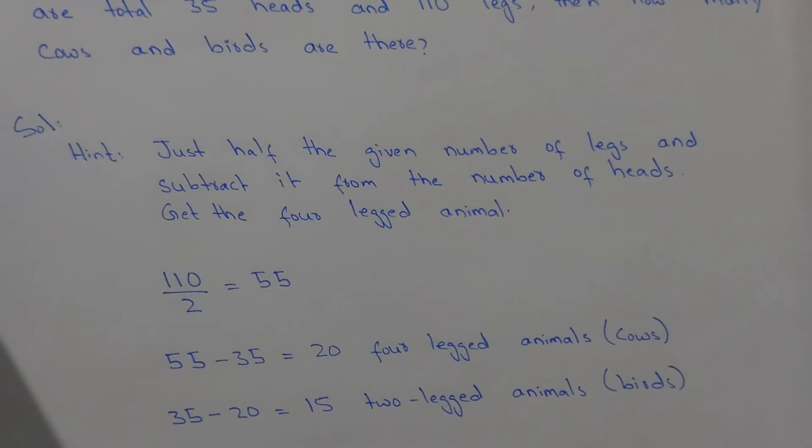So we can say that there are 20 cows and 15 birds in a farm. I hope you understand. Thank you for watching this video.